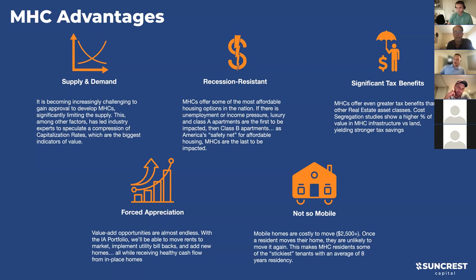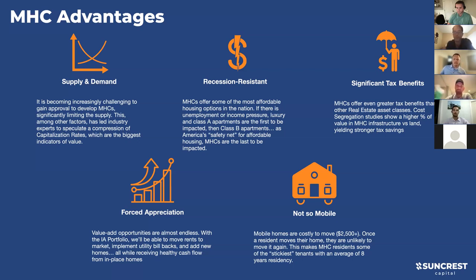It's expensive to move a mobile home - $3,000 to $5,000 - and our residents don't tend to have that type of cash laying around. There's also low tenant turnover - only about 10 to 15% annually versus almost 50% for apartments. Our tenants tend to be sticky - they stick around, the homes stay as well. Lots of advantages for mobile home communities.